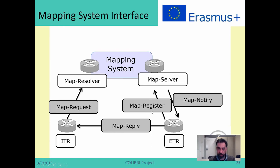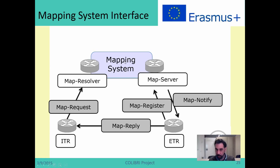This is the mapping system interface. The mapping system supports the following messages. The first is MapRegister, which is used by tunnel routers to register a mapping — whenever they want to register a mapping, they send a MapRegister to the mapping system. The MapNotify message is used by the mapping system to notify a tunnel router that a mapping has been registered successfully. Then you have MapRequest, used to request a mapping from the mapping system, and MapReply, used to send a mapping to a tunnel router. The MapReply is typically not sent by the mapping system itself; instead the mapping system forwards the MapRequest to the tunnel router responsible for that mapping, which in turn sends the MapReply to the requester.